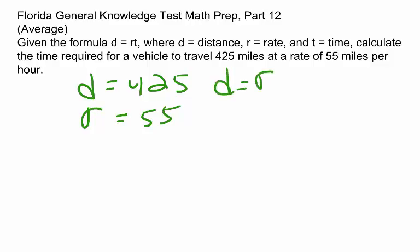If we substitute these values into the formula D equals R times T, we have 425 equals R, our rate, 55 times T, and we're solving for time, T.